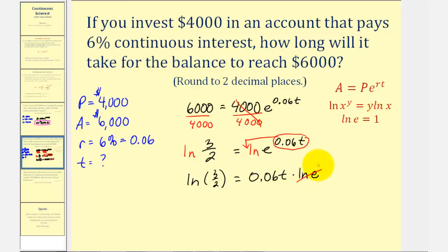So now we have natural log three-halves equals 0.06T times natural log E. But natural log E is actually equal to one, so this simplifies out. So now to solve for T, we want to divide both sides by 0.06. If you didn't recognize that natural log E was equal to one, you could also divide both sides by natural log E, and since it's equal to one, it would not affect the value of T. So this simplifies out.